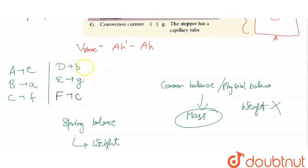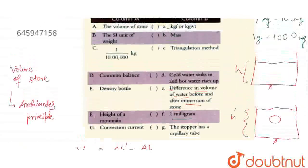One more remaining - convection current, so its answer is G. G's answer is convection current. Convection current basically happens when...